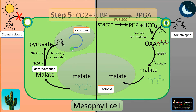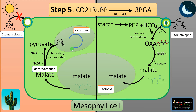This is secondary carboxylation, or the Calvin cycle, where carbon dioxide combines with RuBP — a five-carbon compound — and the first stable compound is phosphoglyceric acid. This reaction ultimately synthesizes glucose and takes place in the stroma of the chloroplast.